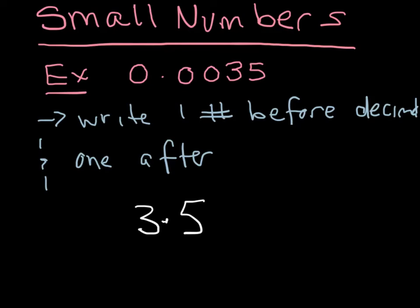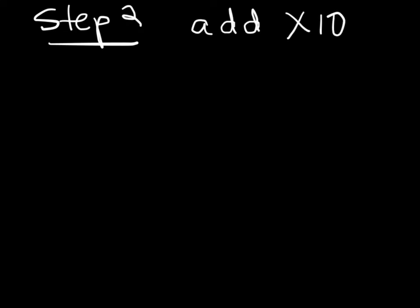So the first thing we're going to do, same as with large numbers, is one number before the decimal, one number after. And the numbers don't change order or anything like that so that would look like 3.5. Similarly, step number two is 0.0035 times 10.